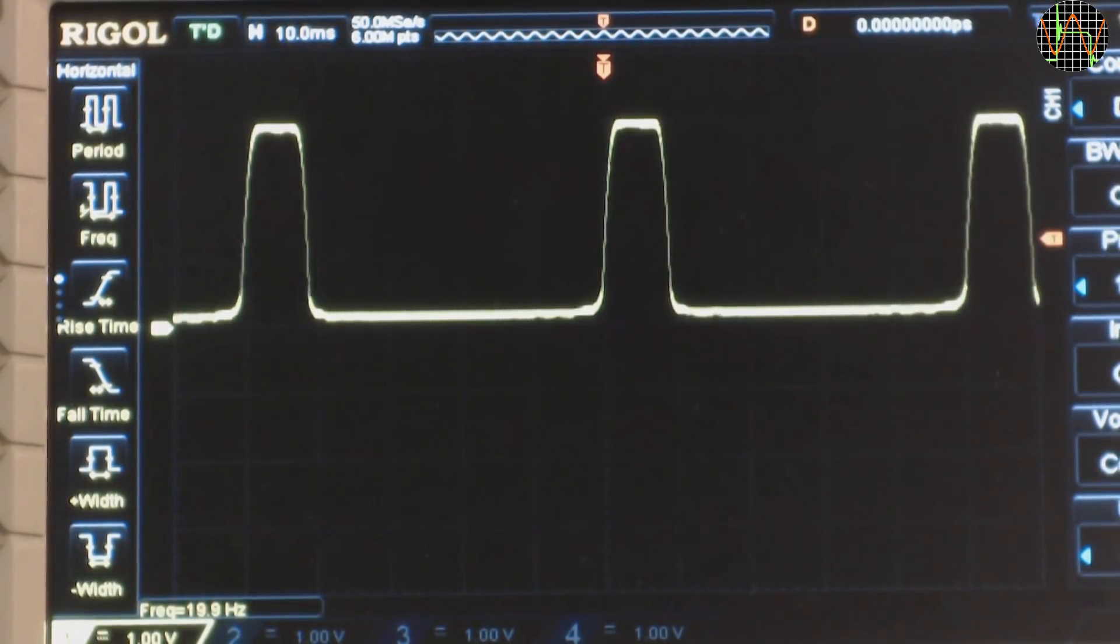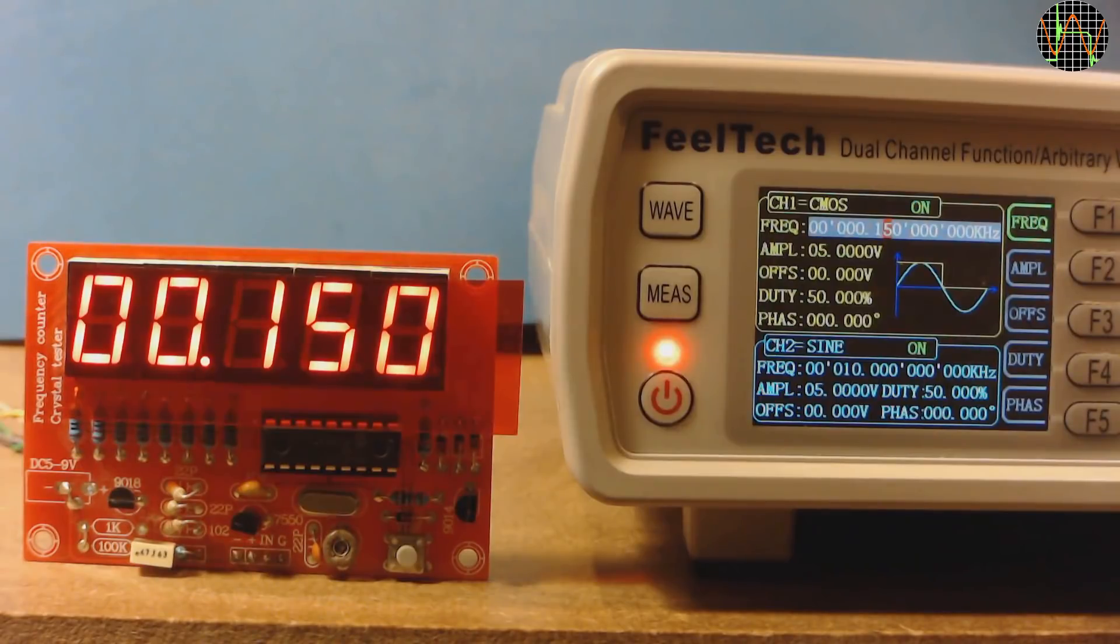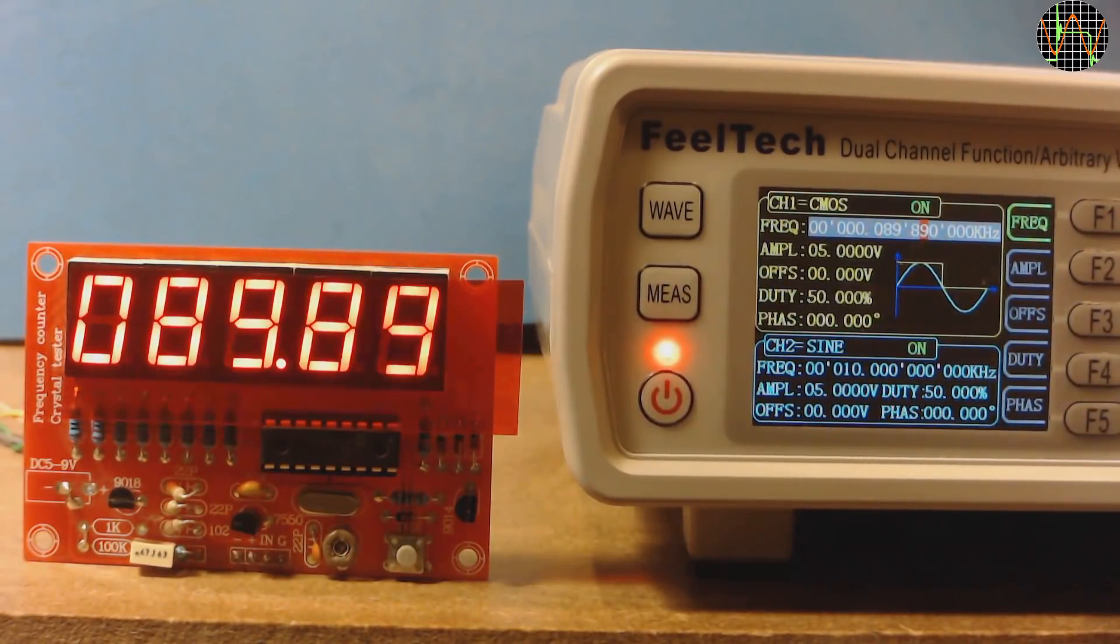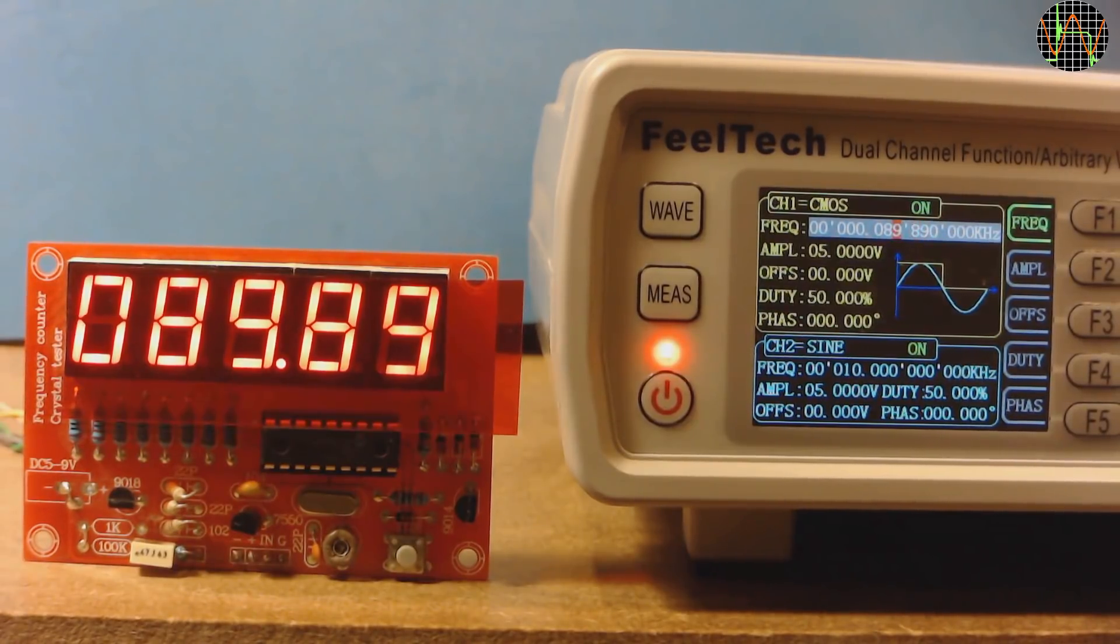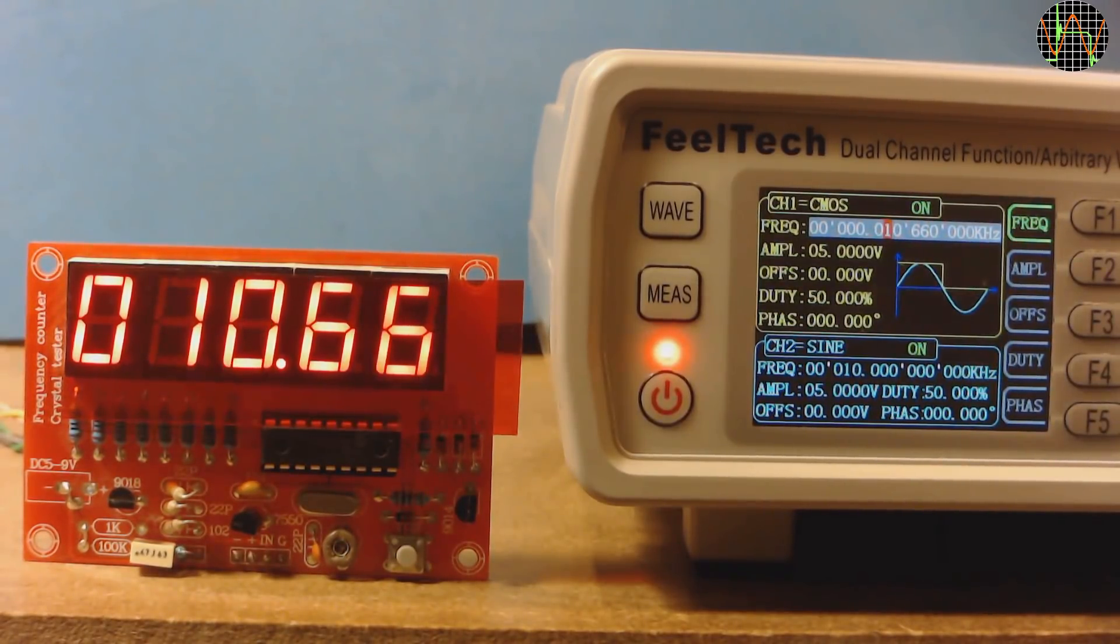So let's move to a more predictable environment with a function generator instead. Here is the counter hooked up to the FY6600 function generator set to 150 Hz. Since that is above the threshold for period measurement, it shows the value in kHz resolution as before. At 100 Hz the period measurement kicks in. Setting the input to 89.90 works fine. Now 89.89. An arbitrary frequency of 79.66 Hz. 10.66 Hz. 10.26 Hz. Notice that the update is much faster now.